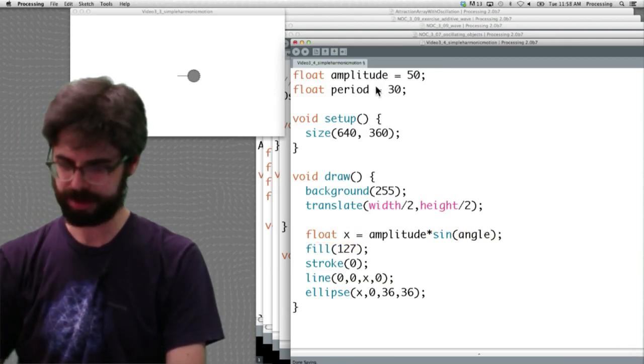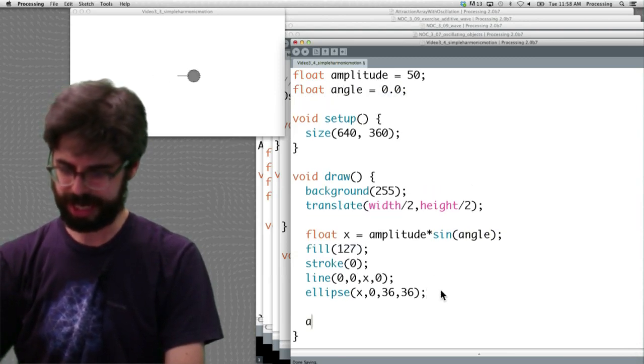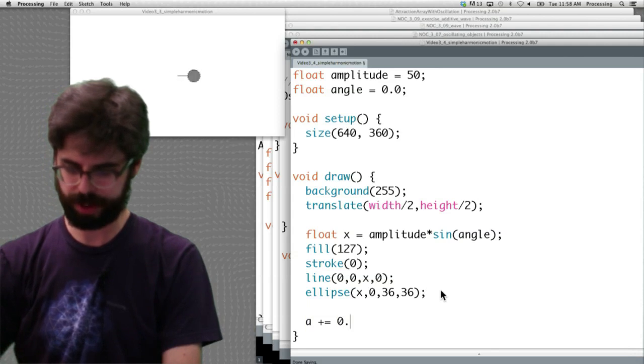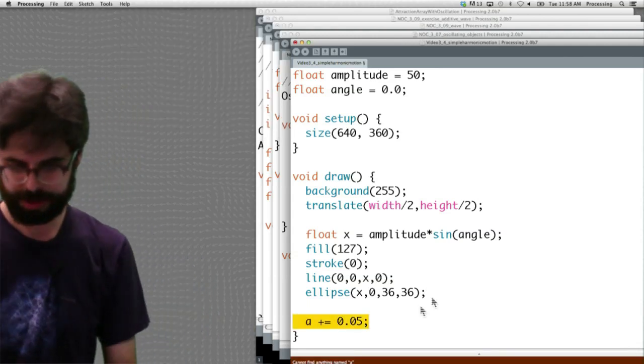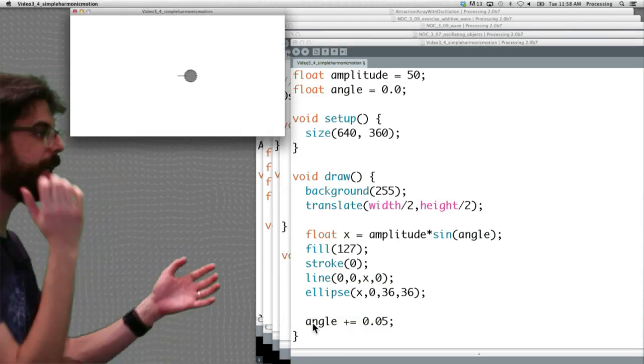And forget about period. Make a variable called angle. And let's just say angle plus equals 0.05. Oops, not a, angle. Let's run that and see what we get.